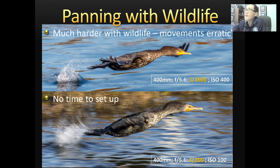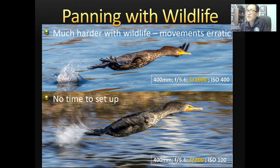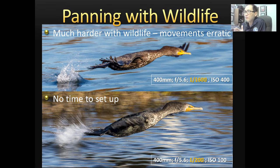Even though bird movements are very erratic, when the bird is taking off, the direction is not as erratic as you think. Like airplanes, birds take off into the wind — that way they have more lift, so it's easier for them to take off. For these two pictures, I kind of knew they were going to go to the right because the wind was coming from right to left. But you still can't really control it, because sometimes they take off at an angle to avoid a predator or something they don't like.